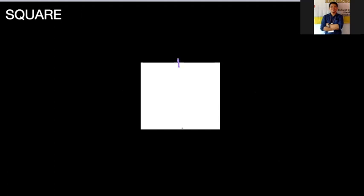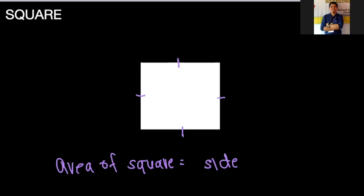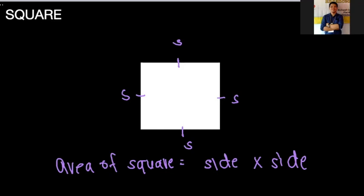Now for a square — in a square, all sides are equal, as shown by the same tick marks. The area of a square can be solved by multiplying side times side. Because in a rectangle we use length and breadth, but in a square they are equal, so we just call them side times side.